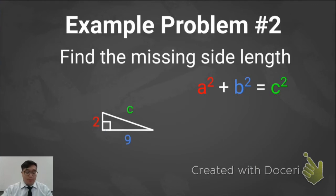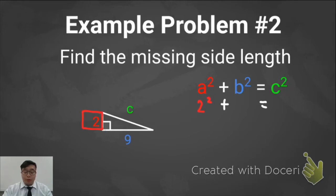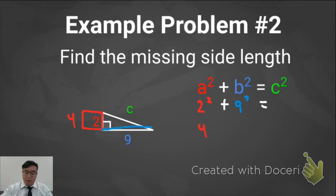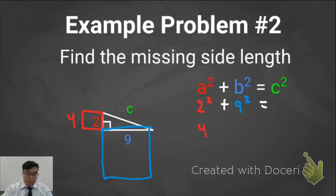Let's go over our second practice problem. Let's compare sides A, B, and C. Side A has a length of 2 — if I square this side, 2 squared, or 2 times 2, is going to be 4. Now side B has a length of 9, and if I square this side, 9 times 9, or 9 squared, is going to be 81.